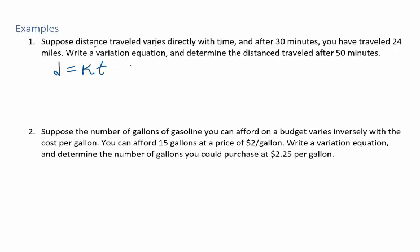After 30 minutes, you've traveled 24 miles. So we're going to substitute 24 for d, which is a distance, and 30 for t, which is a time. And solve this for k, the constant of variation. We get k equals 0.8.